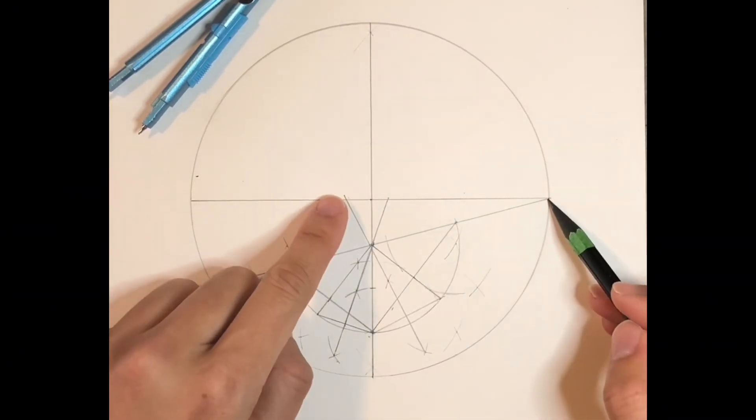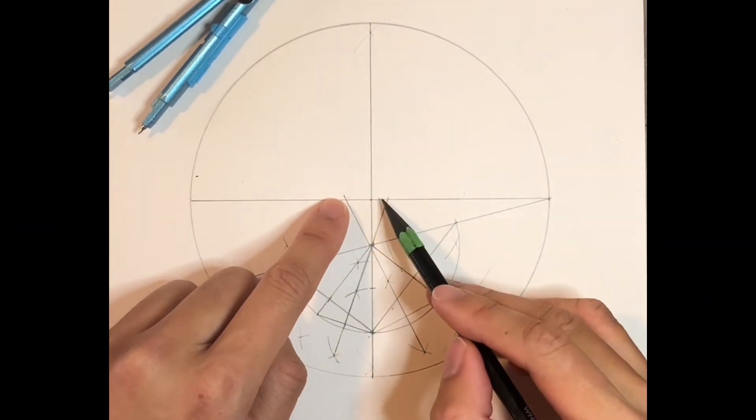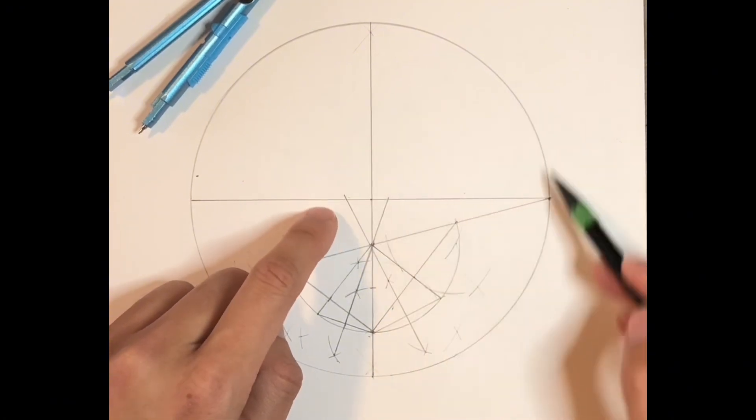So now we want to find the center of these two points. Then we're going to draw a little circle using this radius. So we have two circles.